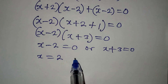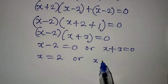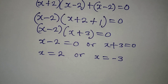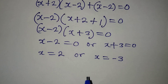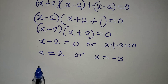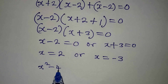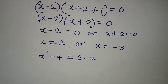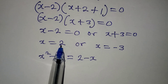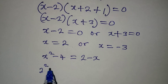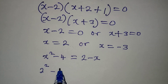x will be equal to 2, or x will be equal to minus 3. Now let's put these two values into the original equation. The original equation is x squared minus 4 equal to 2 minus x. If we are working with 2, that means we have 2 squared minus 4.